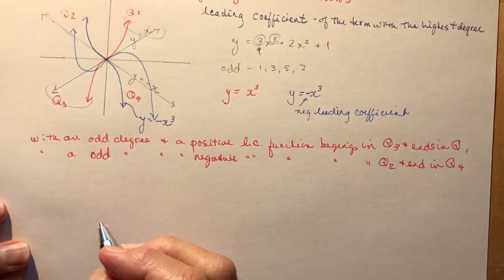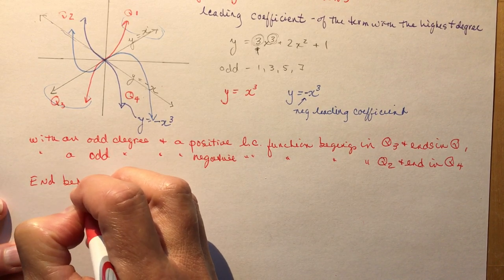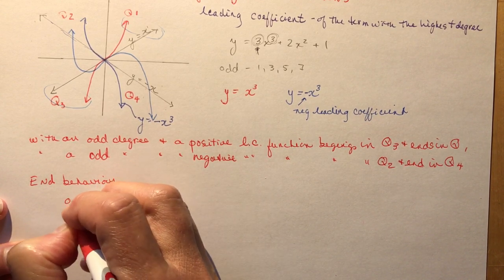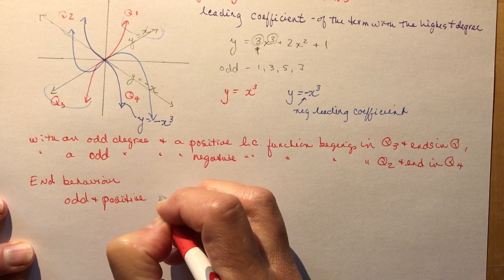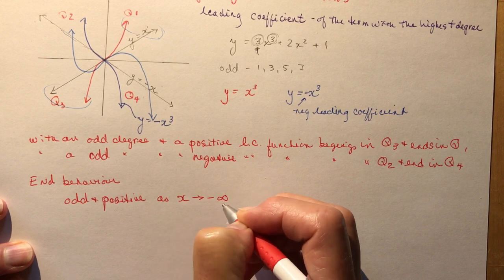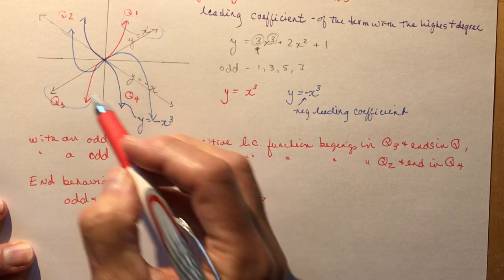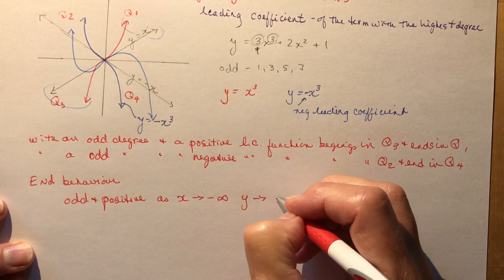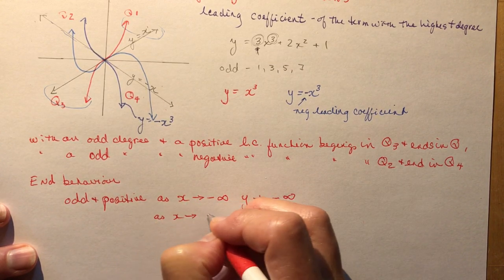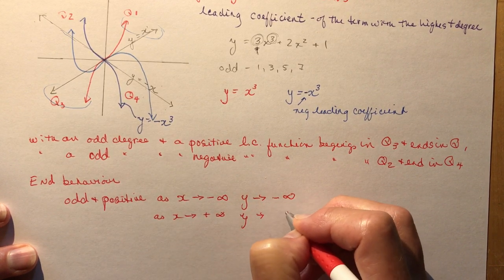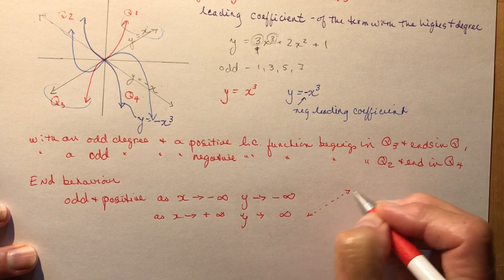We talked about end behaviors before. If you're going to be asked what the end behavior is, for an odd and positive case: as X approaches negative infinity, Y approaches negative infinity. And as X approaches positive infinity, Y approaches positive infinity — because it behaves like a positive slope line.